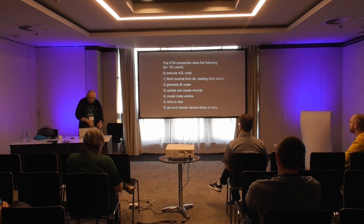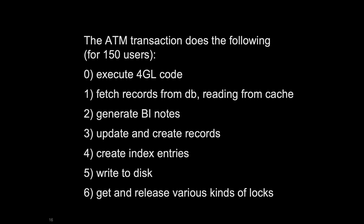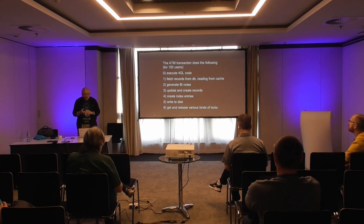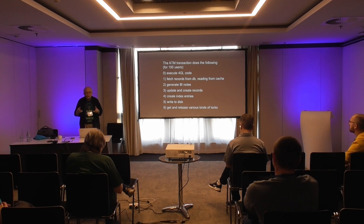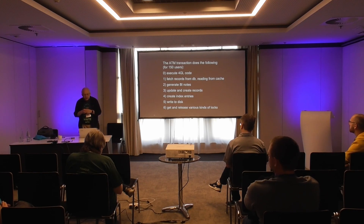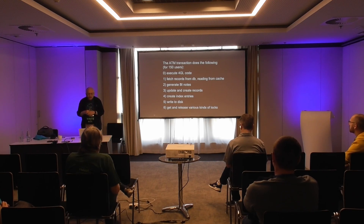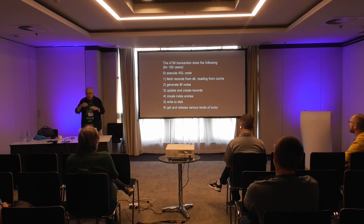If we look at what the benchmark does, it executes a transaction that updates three records and creates one. So it's executing 4GL code. It's reading stuff from the database, from the file system cache, and from disk. It's creating before image notes for the updates and creates. It's doing the updates and creates and creating index entries. And eventually stuff gets written to disk.